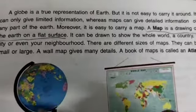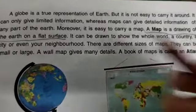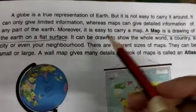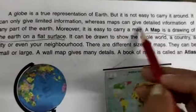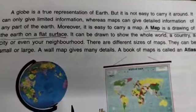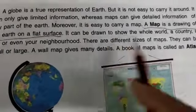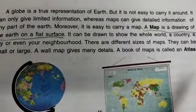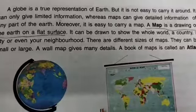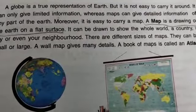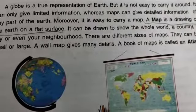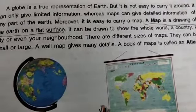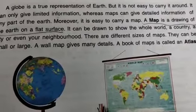A map can give detailed information about any part of the Earth. When we talk about an area or a district, we can get detailed information about roads, mountains, rivers, and places — exactly where they are located.